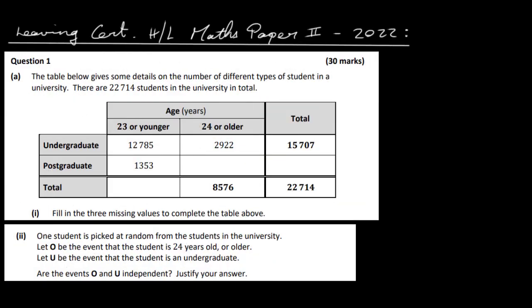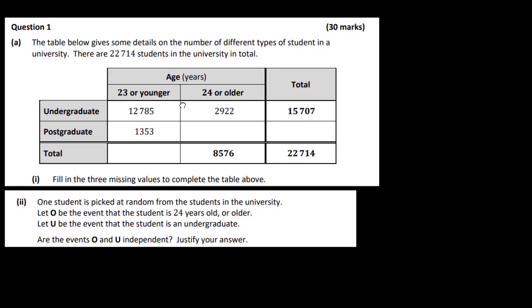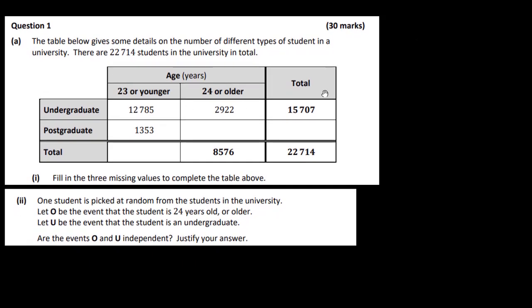Let's start into Paper 2. This is the Leaving Cert Higher Level Maths Paper 2 for 2022. Question 1. The table below gives some details on the number of different types of student in a university. There are 22,714 students in the university in total.